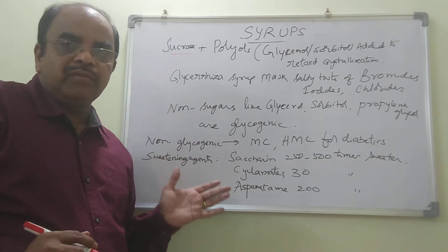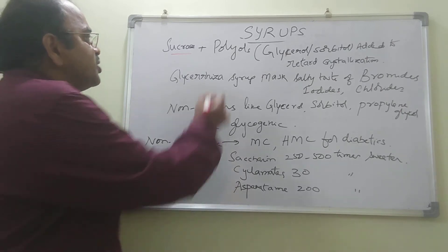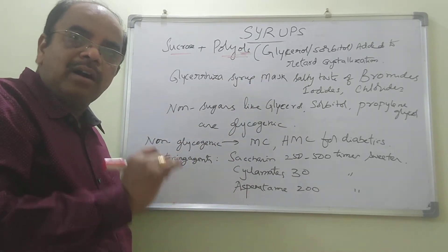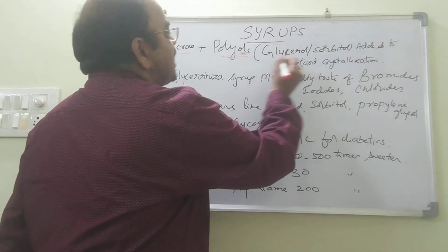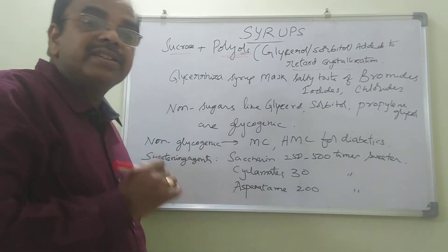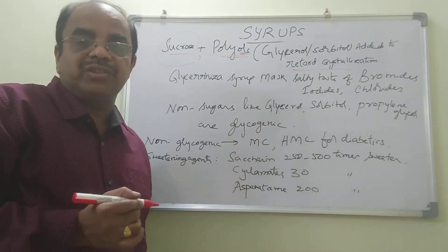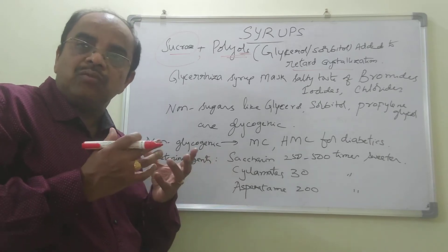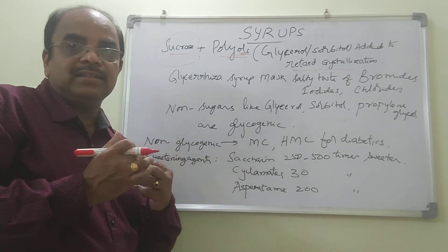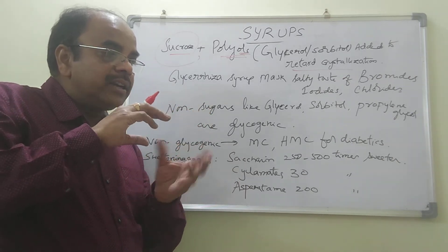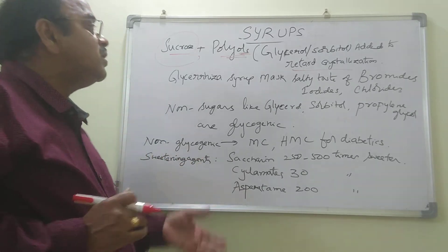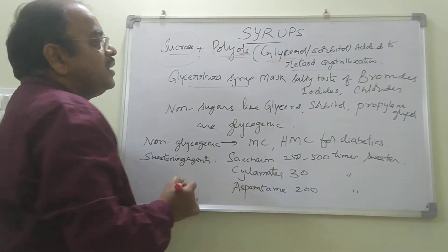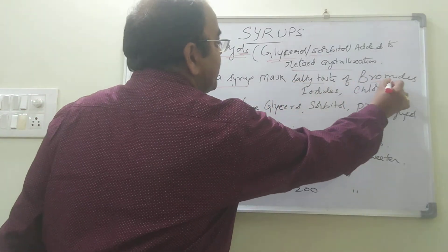Apart from sucrose, we add a few more substances in the formulation of syrups — polyols, which may be glycerol or sorbitol, also called polyhydric alcohols. These substances are added to retard the crystallization of sucrose. Generally, with sucrose there is a possibility for crystallization during summer season or whenever there is a change of temperature. There is a possibility for evaporation of moisture from the syrup and sucrose may crystallize, causing a capping problem. In such a case, it is better to add glycerol or sorbitol. Glycerol syrup is also used to mask the salty taste of bromides, iodides and chlorides.